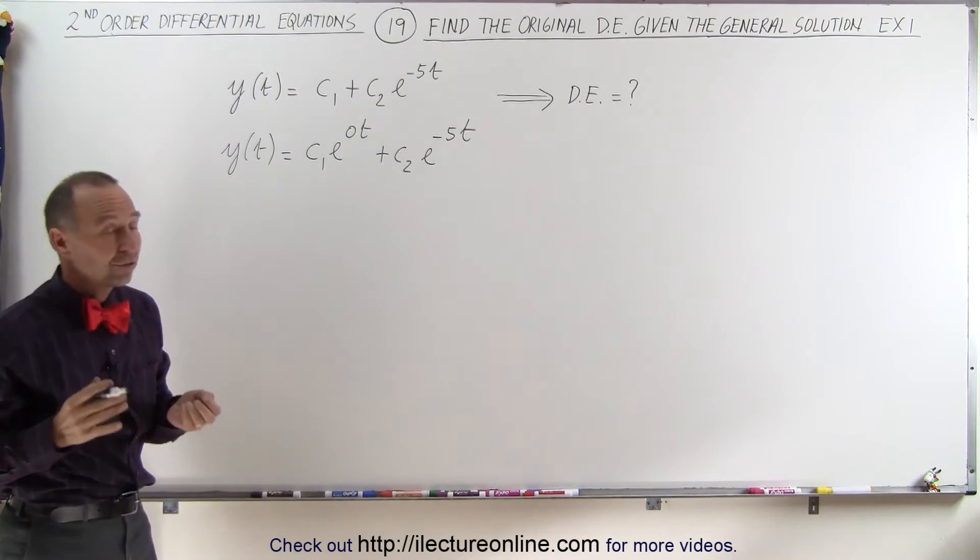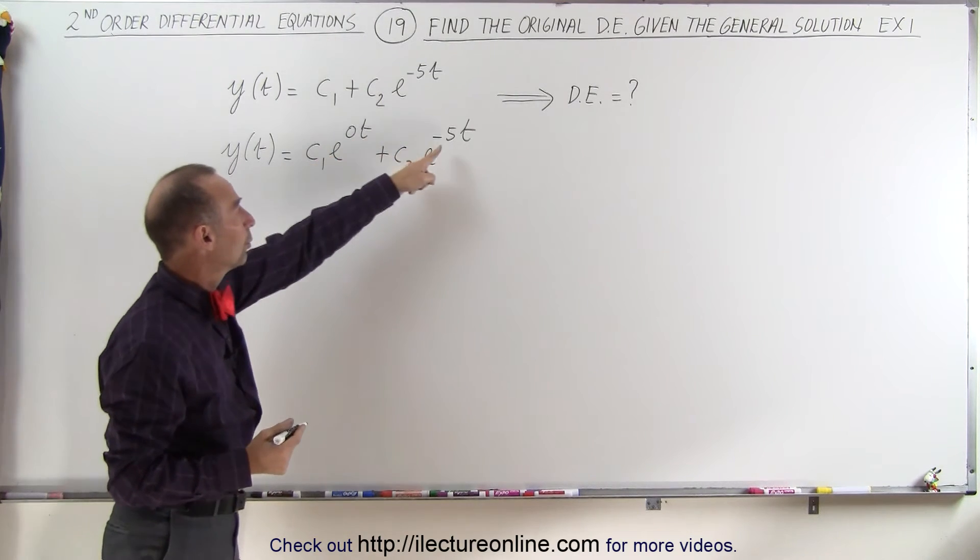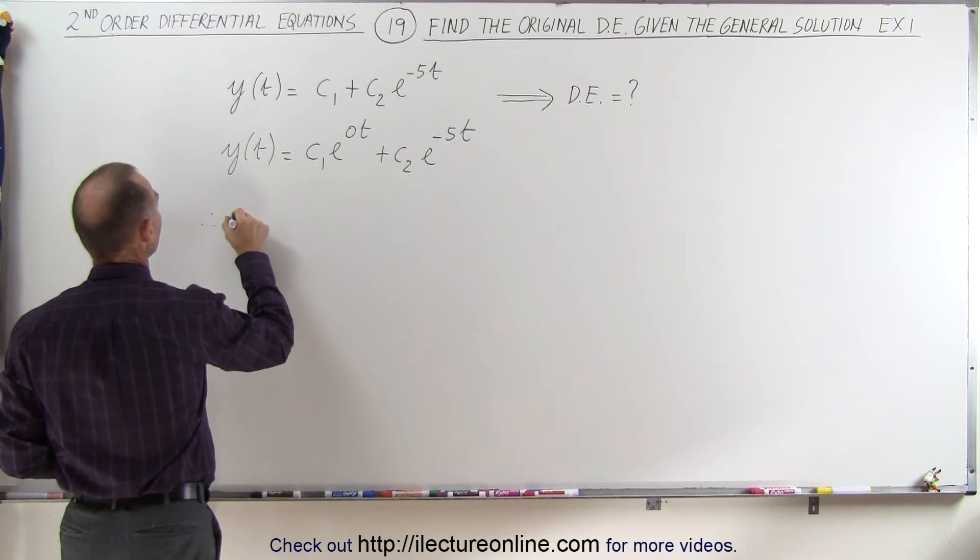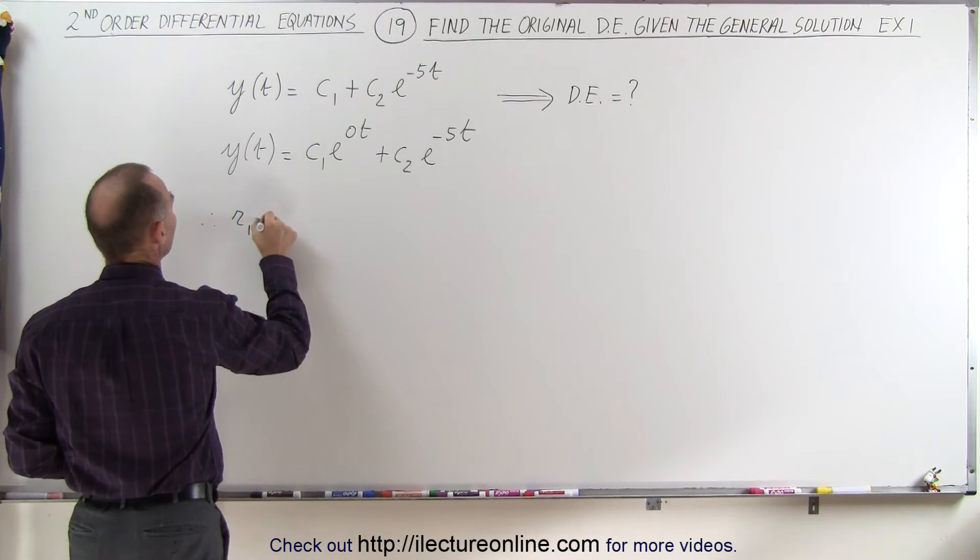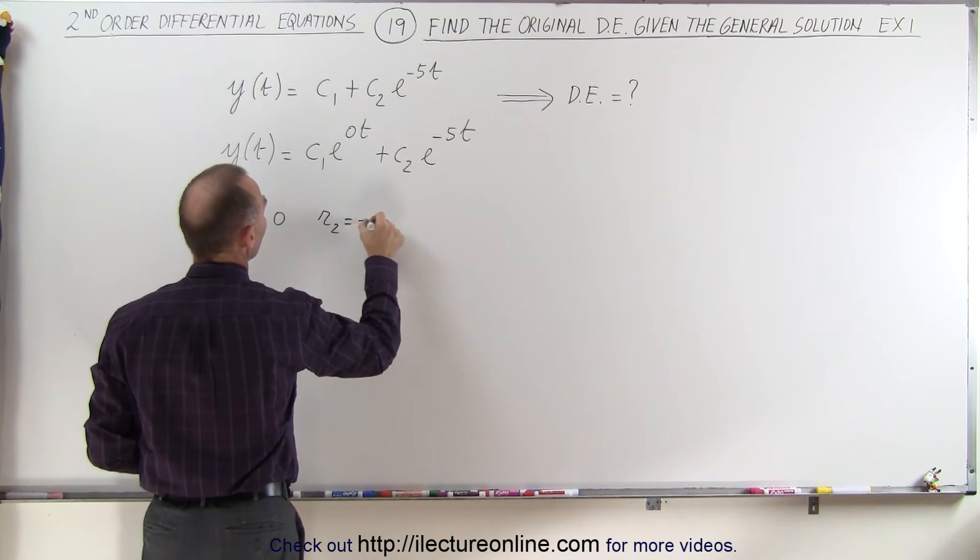Now this helps us figure out that there's actually two real roots. One root is equal to 0, and the other root is equal to minus 5. So that tells us, therefore, that root 1 is equal to 0, and that root 2 is equal to minus 5.